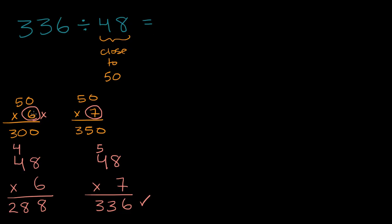With a little bit of trial and error, but it was an informed trial and error. We got 336 divided by 48 is equal to seven. This is what I meant. It's a bit of an art.